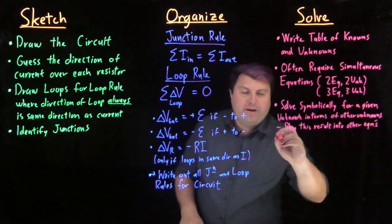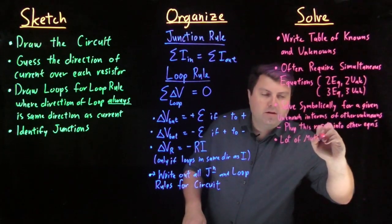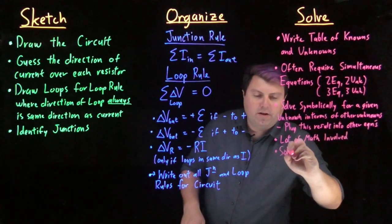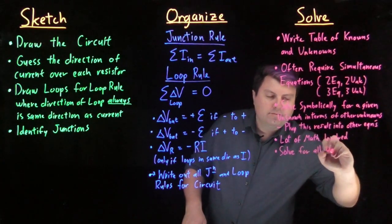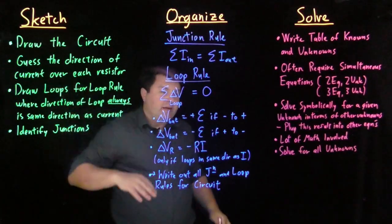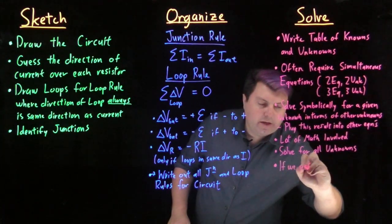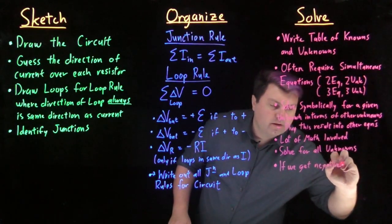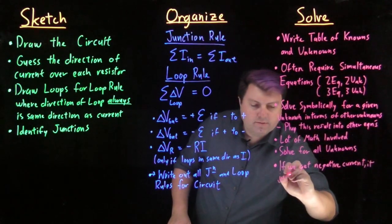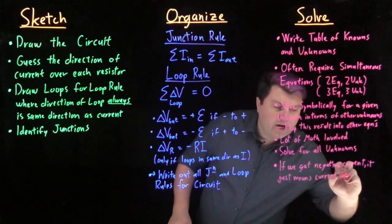So this is going to take quite a bit. There's a lot of math involved, but we eventually solve for all unknowns. And back here when we made that guess, if we get negative current, it just means the current is in the opposite direction of what we guessed.